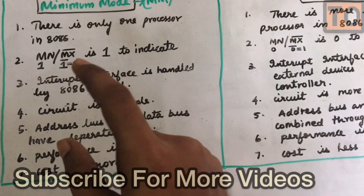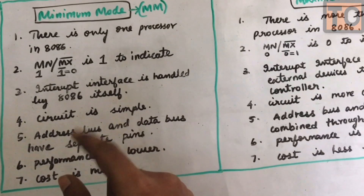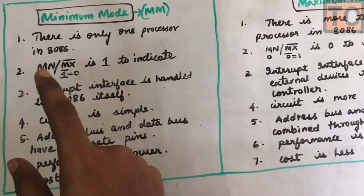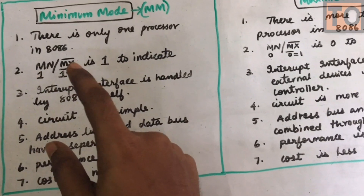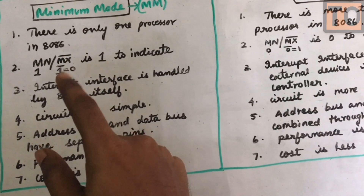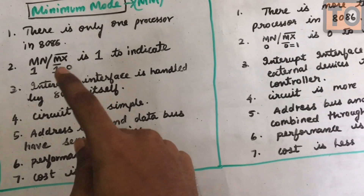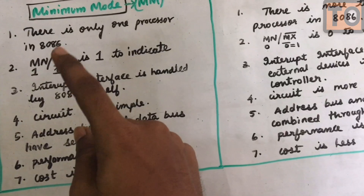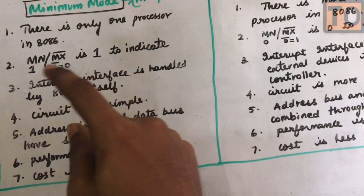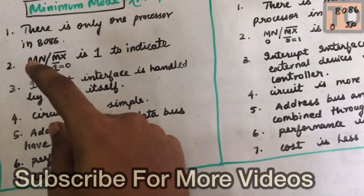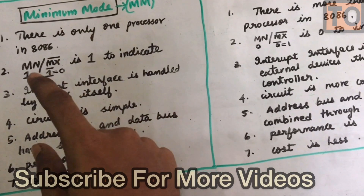In the minimum mode, there is 1 bar — that means MN bar is equal to 1. So if you have the minimum mode, it will be active. That means there is MN 1.